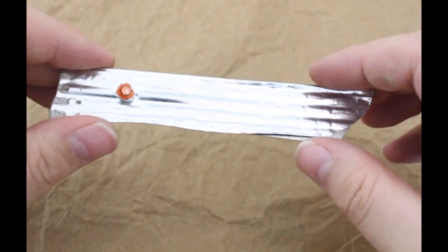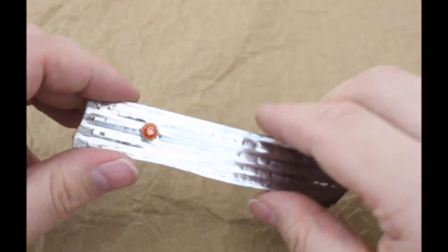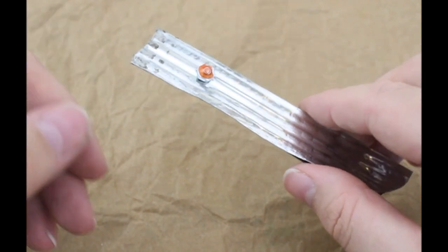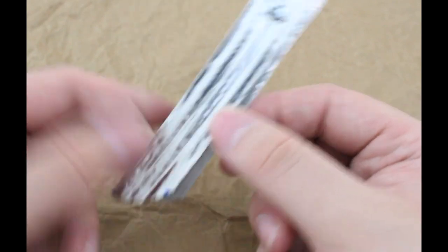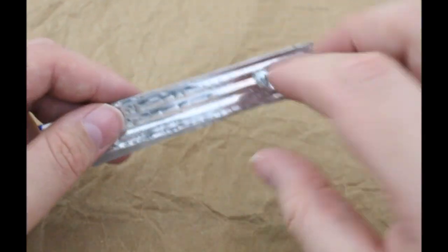If it ever snaps or something, you can just undo the bolt. Unless you use a rivet, then you can't undo it. But that is not too bad as well because it is just a piece of sheet metal.